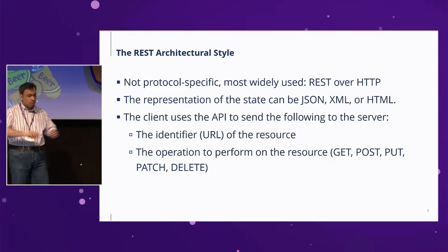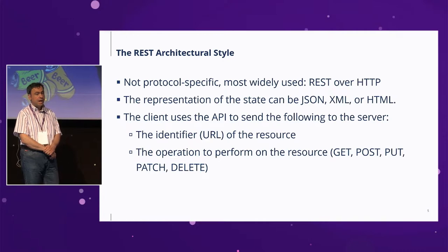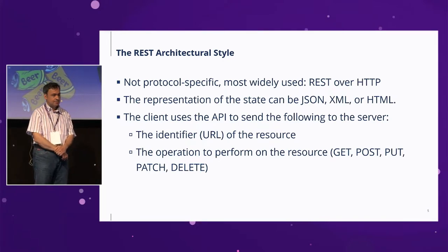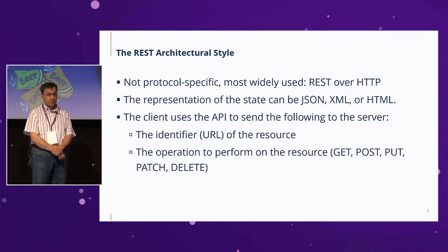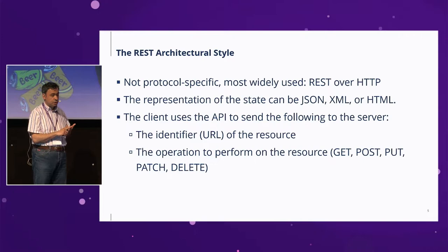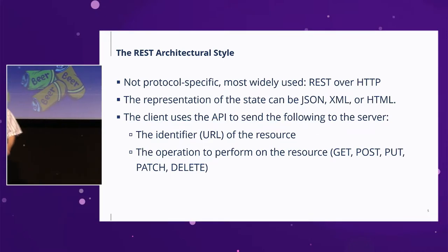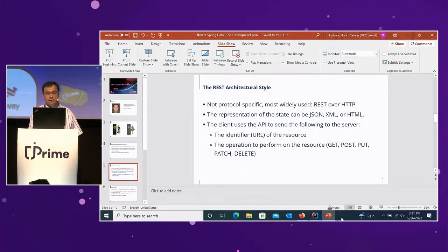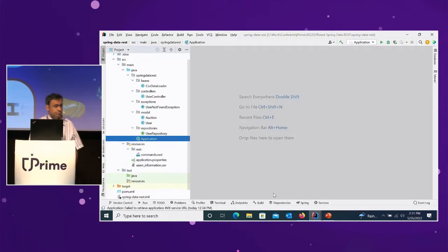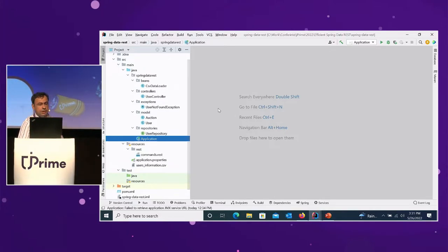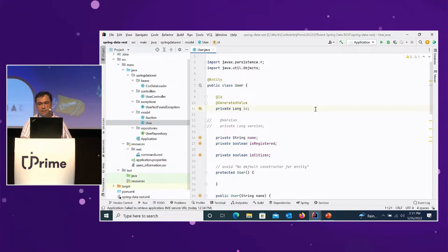The representation of the state of our resources can be in various formats — usually JSON, but also XML and HTML. Whenever I access a server I have to specify two things: the identifier or URL of the resource and the operation — those verbs GET, POST, PUT, PATCH, DELETE. In general in my talks we have large demonstrations, and here we have some application that we are going to use as the vehicle for our talk.